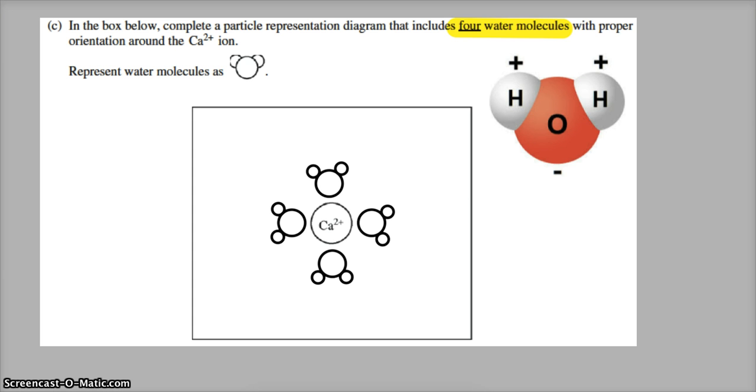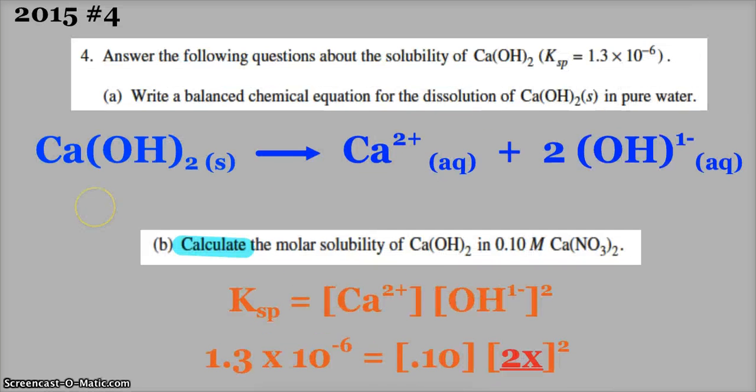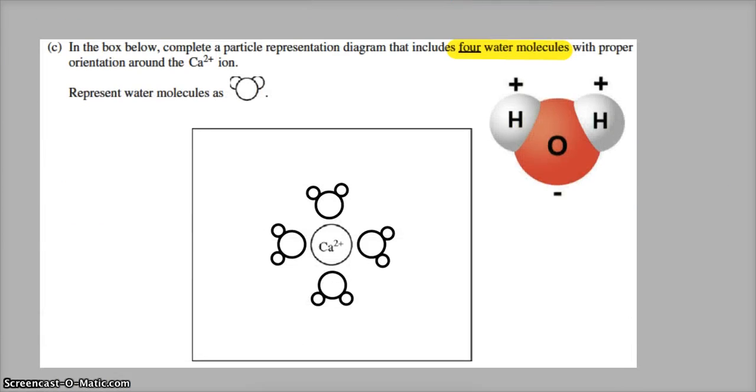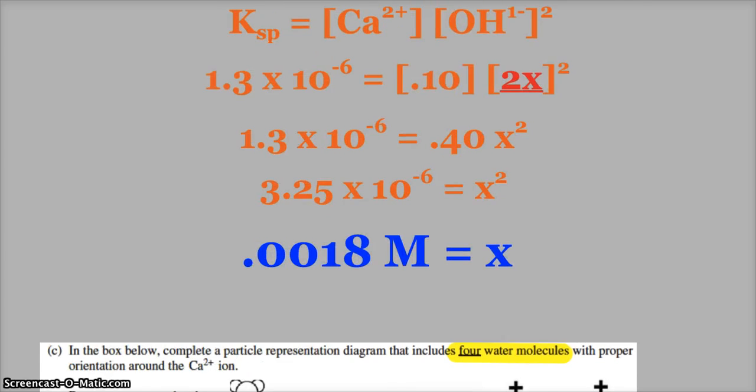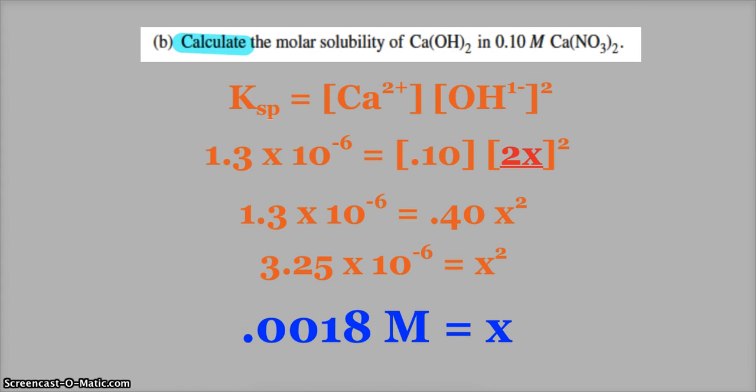All in all, wasn't a horrible question. Writing of the balanced chemical equation should have been easy. Drawing the water molecules should have been easy. This was pretty easy too. You just had to, since it's calcium nitrate, that's why I plugged in the 0.1 for the calcium concentration, and I had to use 2x for my hydroxide.